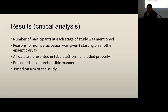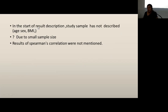Critically analyzing the results: the number of participants at each stage of the study was mentioned and reasons for non-participation were given, such as starting on another antiepileptic drug. All data are presented in tabulated form, properly titled, and in a comprehensible manner. Results are based on the aim of the study. However, the study sample was not described according to age, sex, and BMI at the start — possibly due to the small sample size. Results of Spearman's correlation were not mentioned.